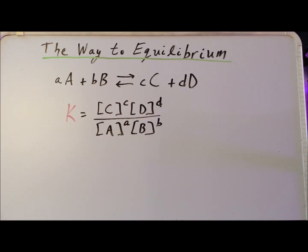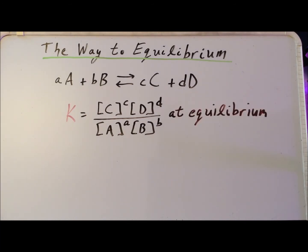We define a quantity called the equilibrium constant K, that has this particular expression where the concentrations of the products are in the numerator and the product of the concentrations of the reactants are in the denominator. The given expression is equal to the equilibrium constant so long as we are actually at equilibrium. The equilibrium constant is a number, and this number will be different for different chemical reactions, and it will depend upon the temperature.